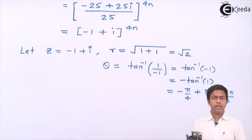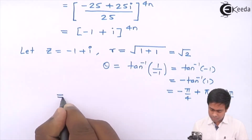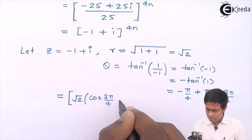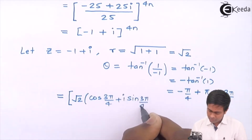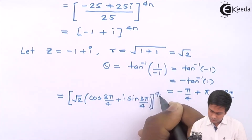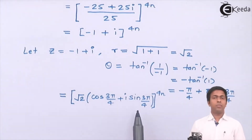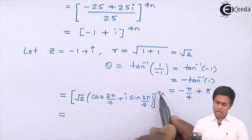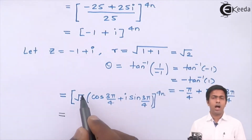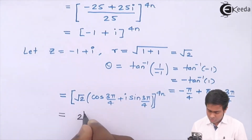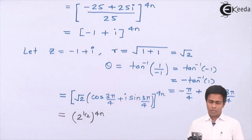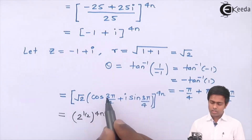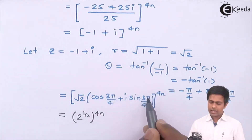With r = √2 and θ = 3π/4, the polar form is z = √2 (cos(3π/4) + i·sin(3π/4)). Raising this to the power 4n, by De Moivre's theorem the power goes with r and the angle gets multiplied: [√2]^(4n) × [cos(3π/4 × 4n) + i·sin(3π/4 × 4n)].